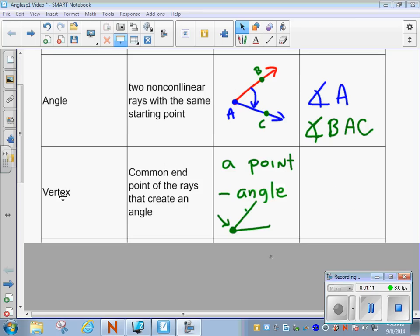Next up is a vertex. And as I just used it in that definition for an angle, a vertex is basically a common endpoint of where two rays create an angle. That's an endpoint or a vertex.